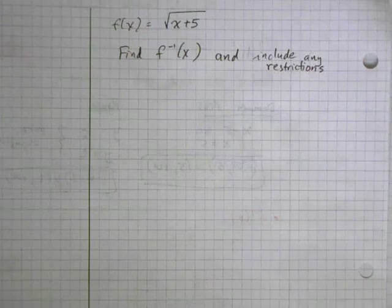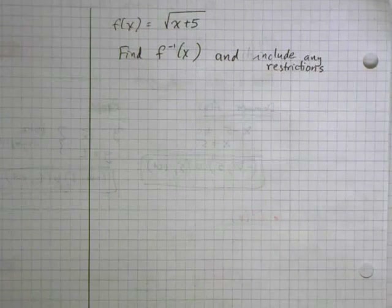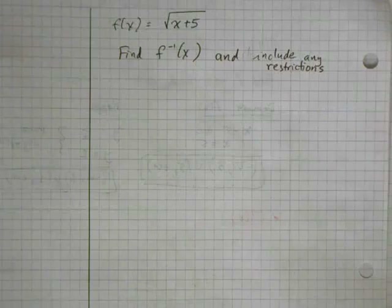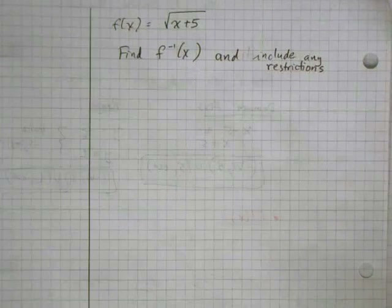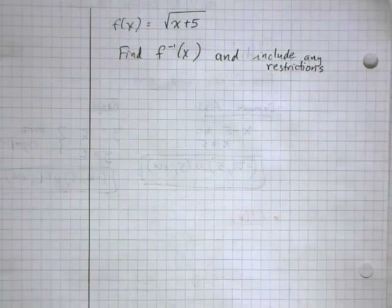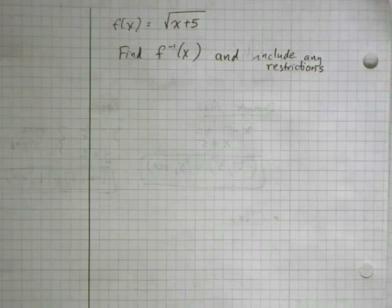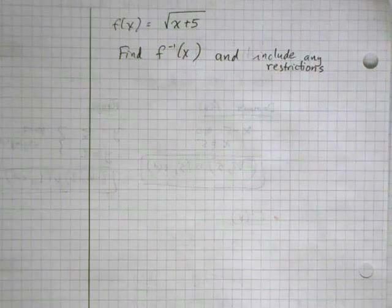Here I have a function f of x equals square root of x plus 5, and I'm asked to find f inverse of x and also include any restrictions that the function may have.